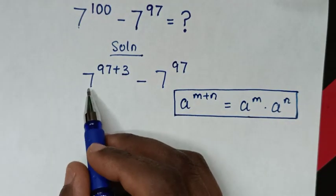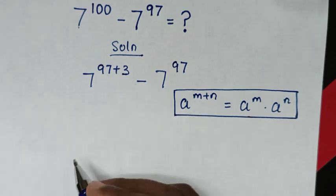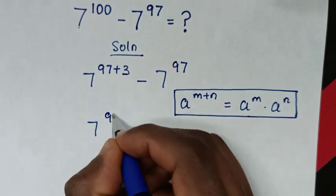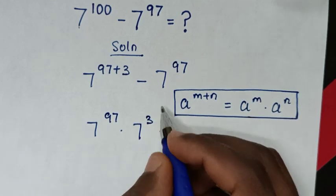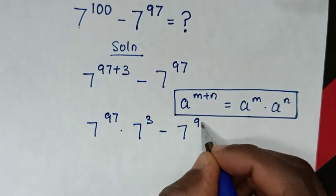So in here 7 power of 97 plus 3, it will be 7 power of 97 times 7 power of 3, then minus this 7 power of 97.